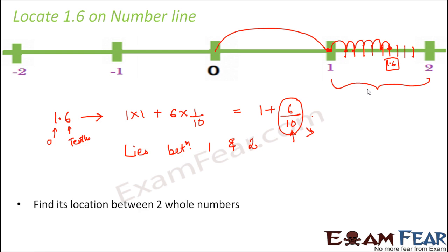In short, find its location between two whole numbers, divide the block between the whole numbers into 10 equal divisions. These are the two important steps that you need to remember.